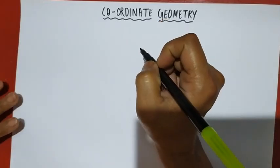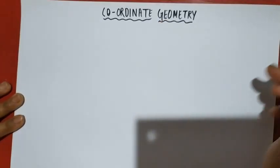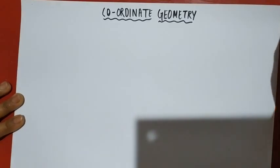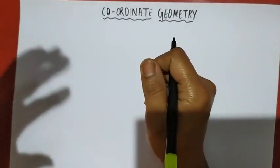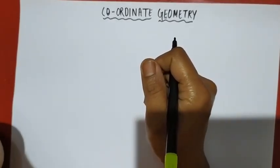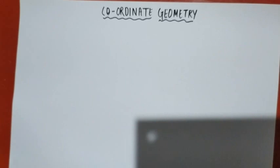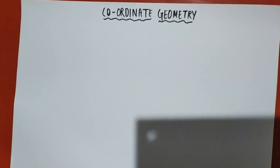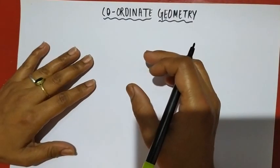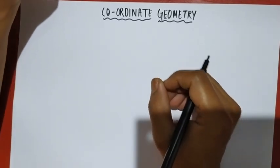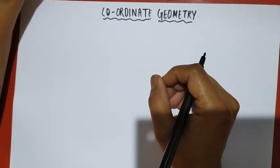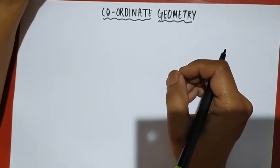Welcome, students! Welcome to Coordinate Geometry. This is class 9, chapter 4 of Coordinate Geometry. This is the introduction of the 4.1 exercise.